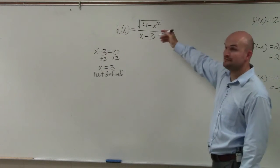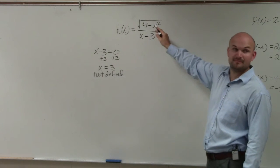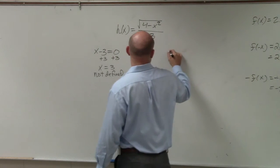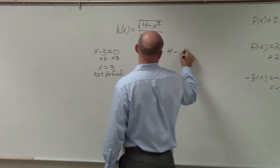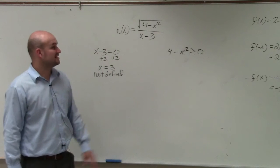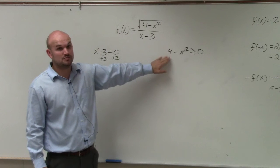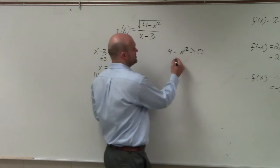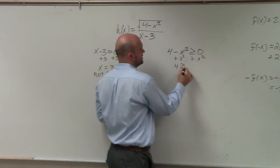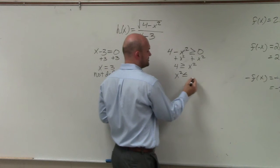The next one is if you have a radical or even root, any number that makes the radicand negative is not defined. So what we do for our second restriction is I do 4 minus x squared has to be greater than or equal to 0, right? Because if we find a number that makes it negative, it's not defined. So this is actually going to tell us what is defined. So what I'll do is I'll just add x squared to both sides. And I get 4 is greater than or equal to x squared, or x squared is less than or equal to 4.